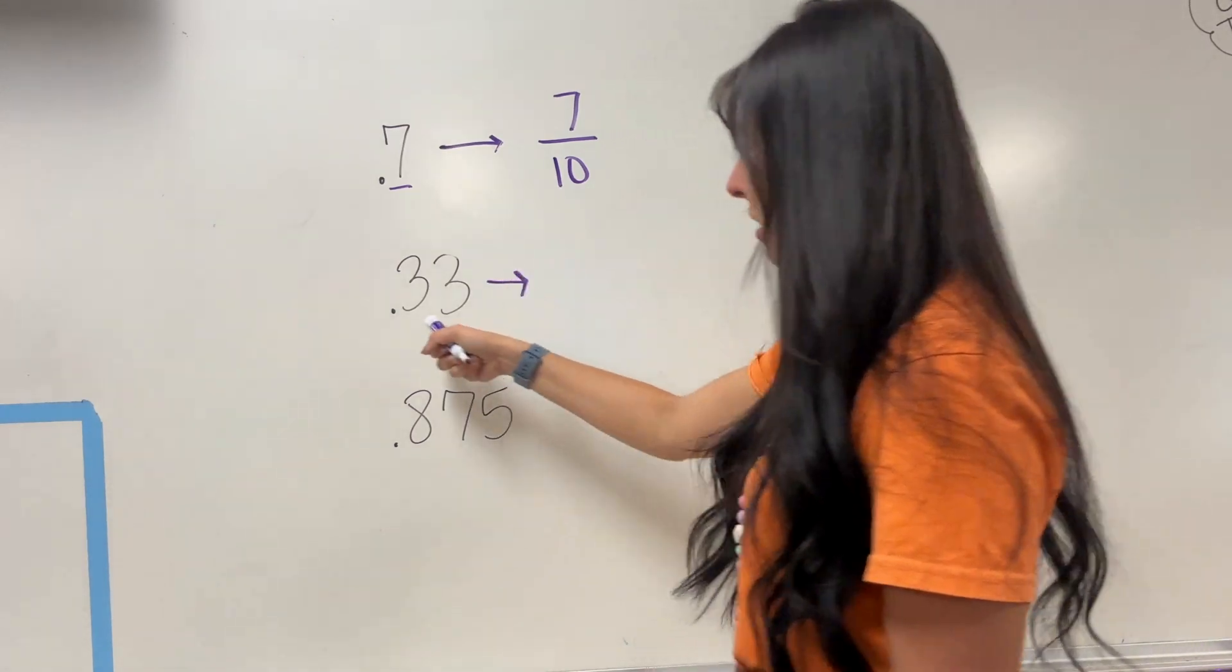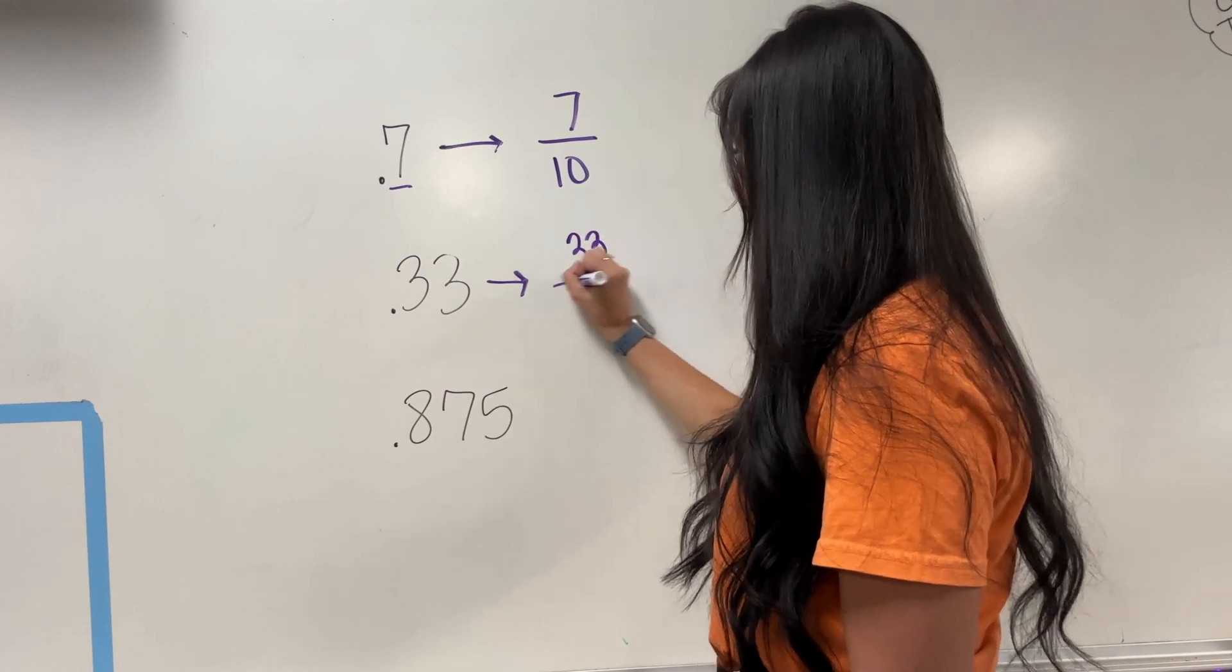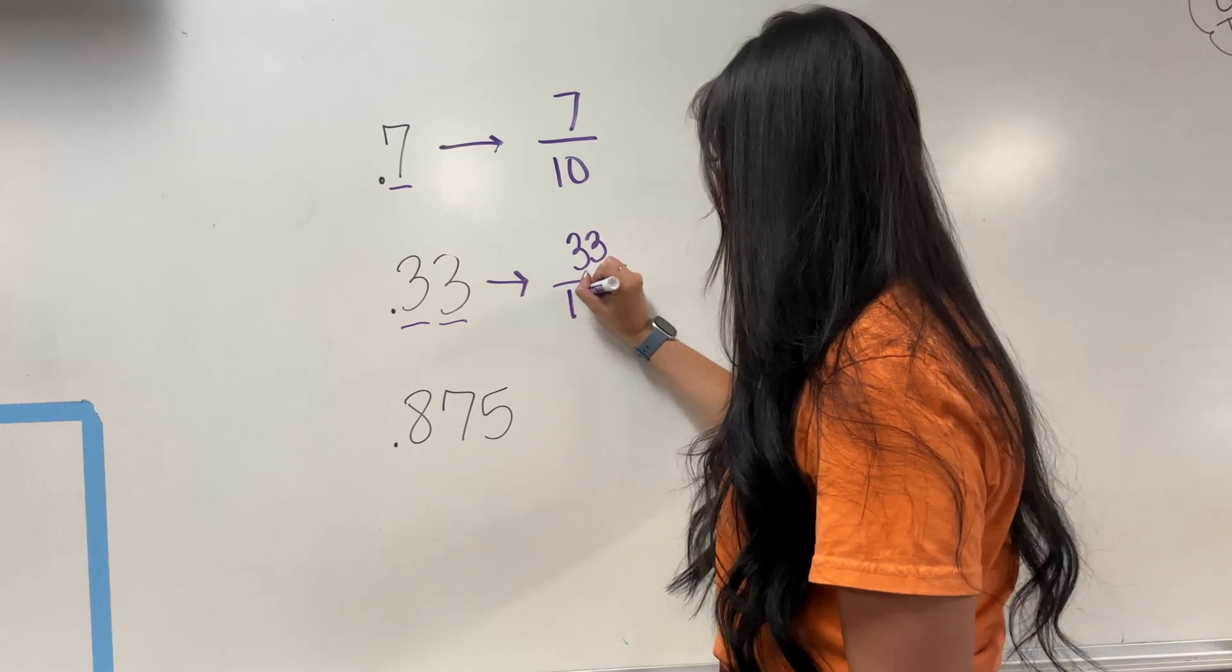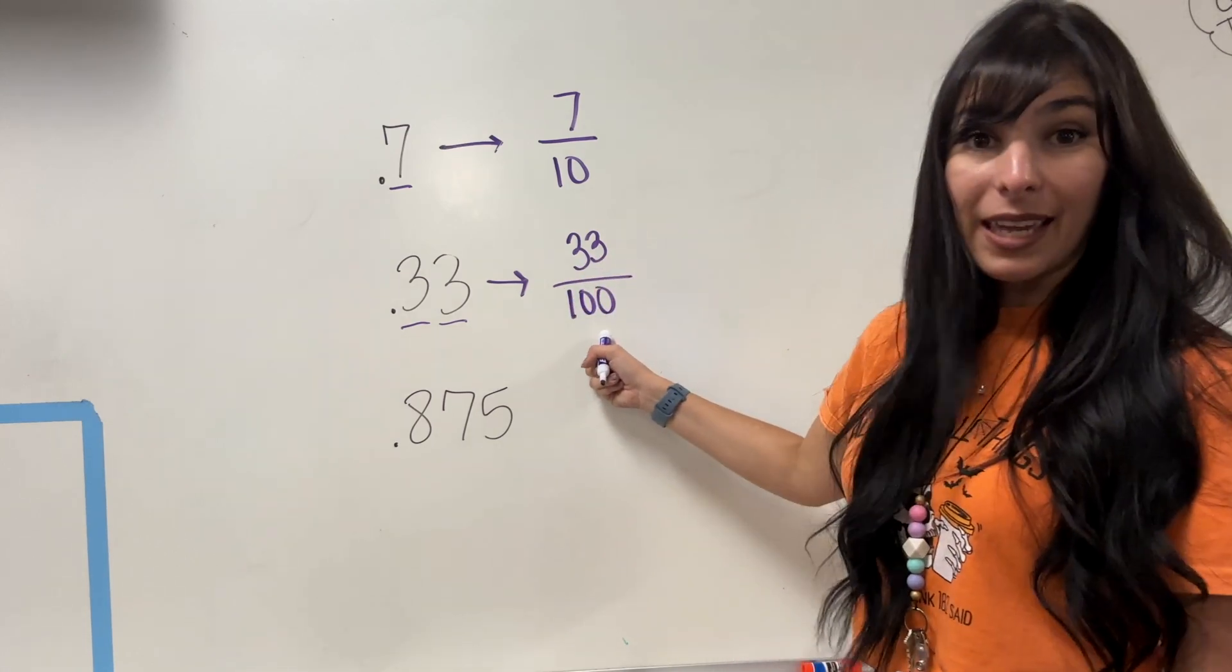This next one, I keep the top as my numerator. On the bottom, I have two numbers behind the decimal, so it's going to be two zeros, making it 100.